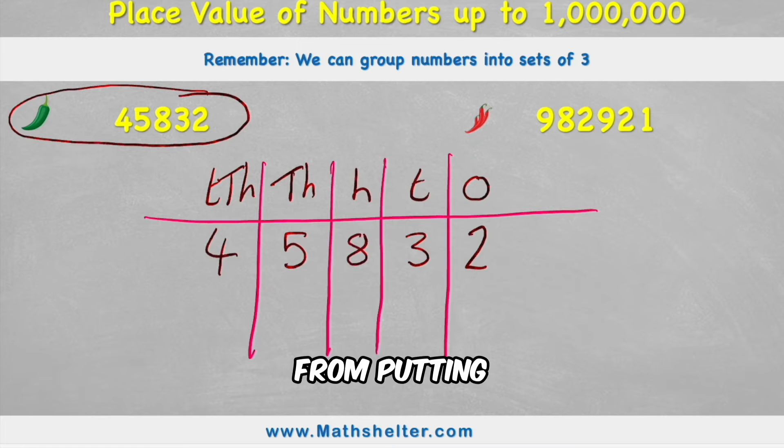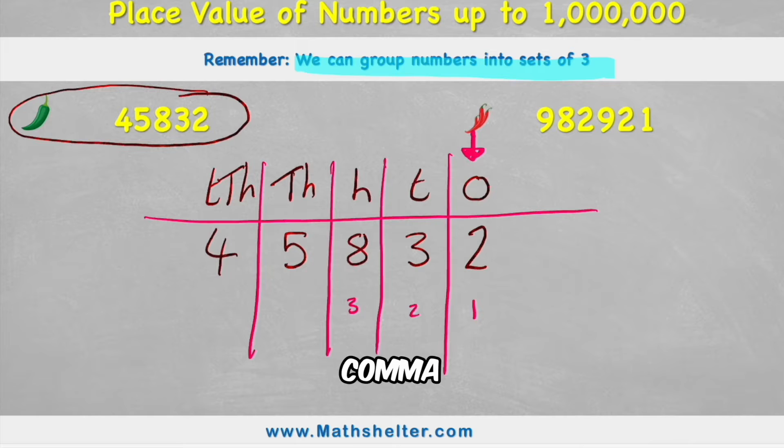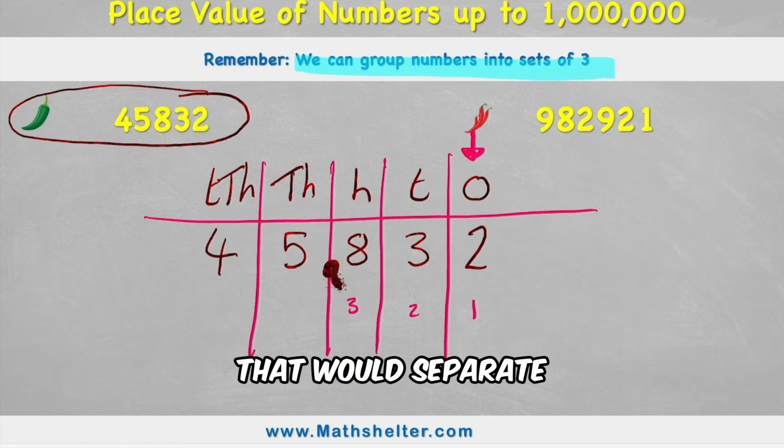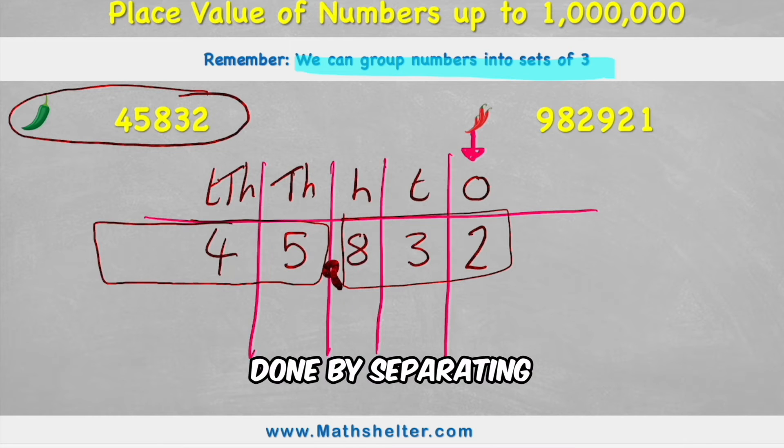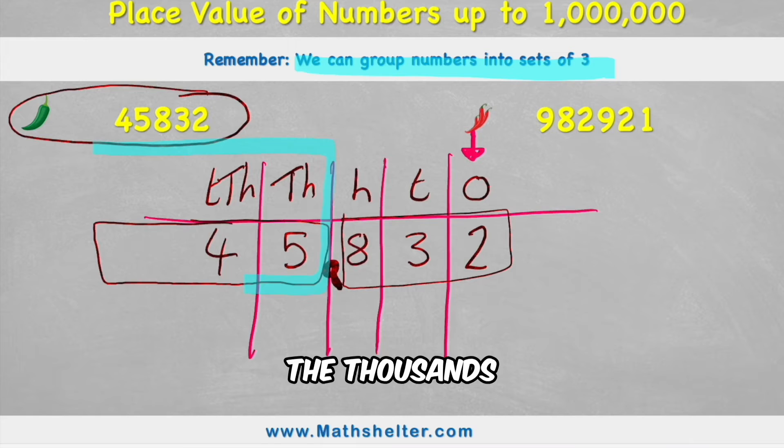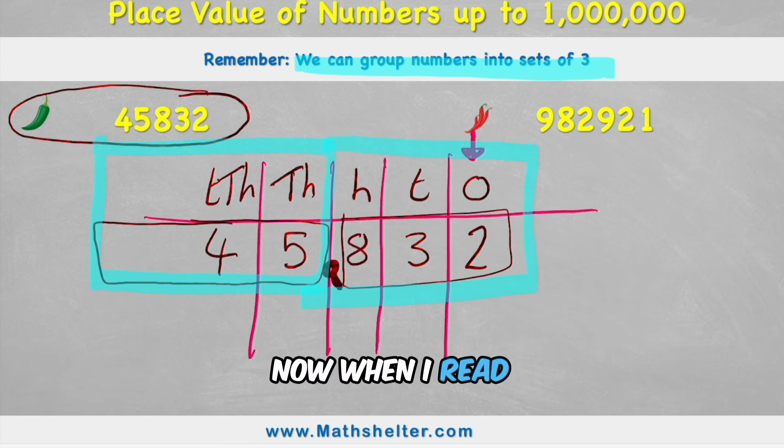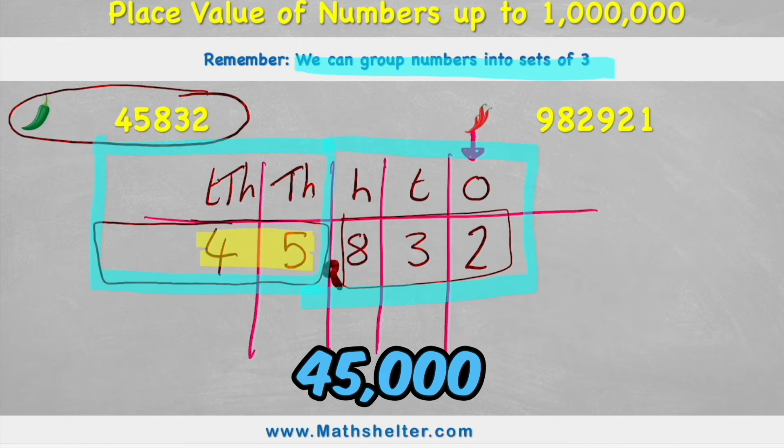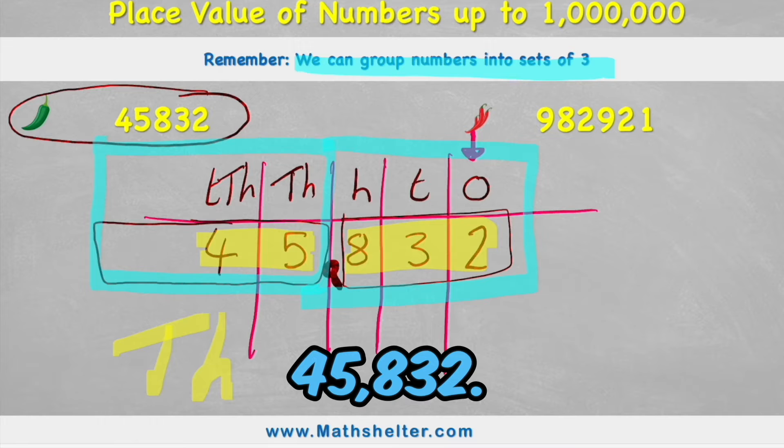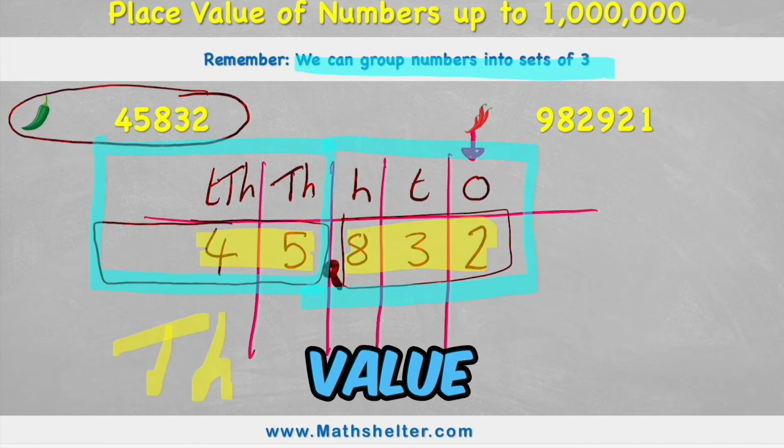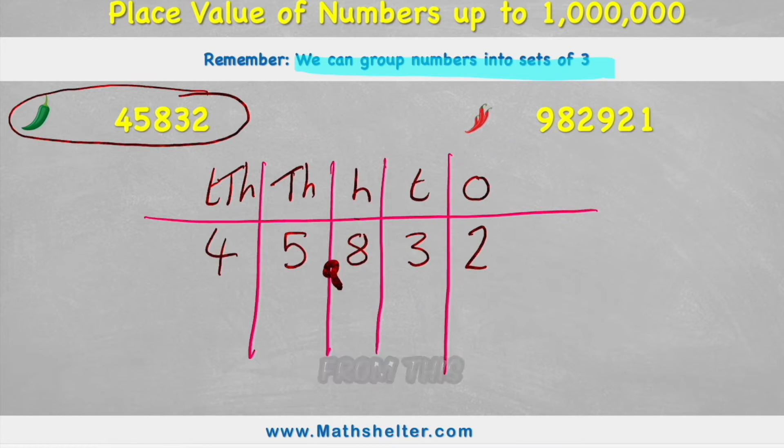Now let's focus on things that we should be able to learn from putting it into this place value chart. Well, I said that we can group numbers into sets of three. So what we need to remember is that the ones column always starts our set of three. So if I was to count one, two, three, I could put a comma just here. And that would separate this group of three numbers from the next group of three. And what we've done by separating this number with that comma is we've separated the thousands from just the hundreds. Now when I read my number, I could say that I have 45,000, and then I can just look at my 832 to complete my number. So I've got 45,832. So that's the first use of our place value chart to help us actually read the number.